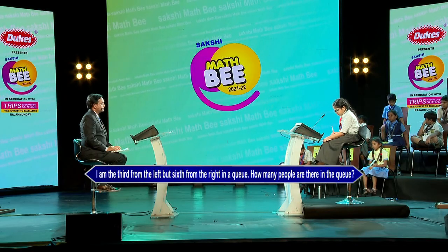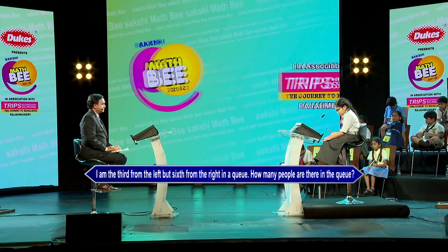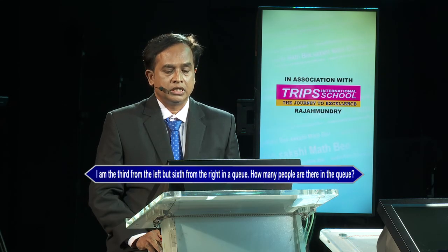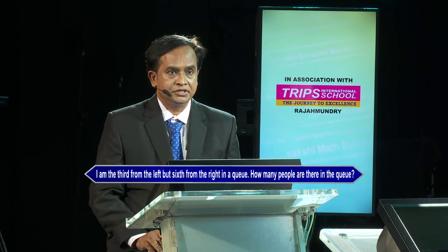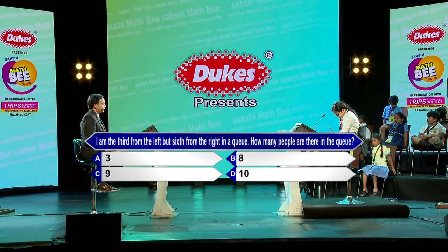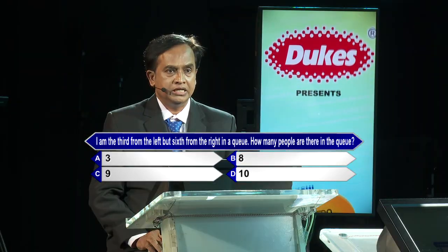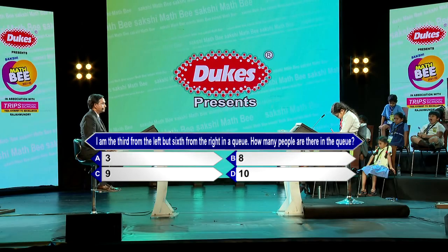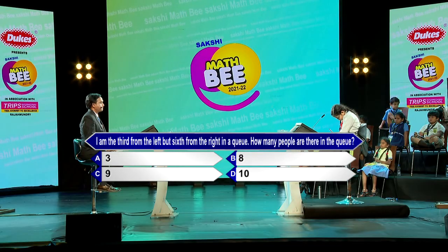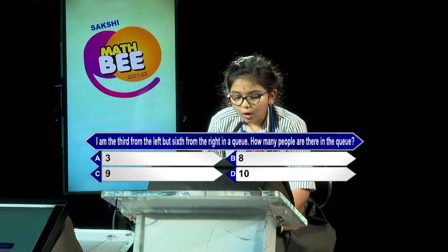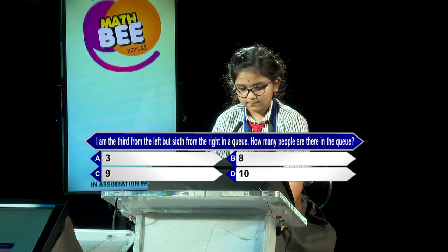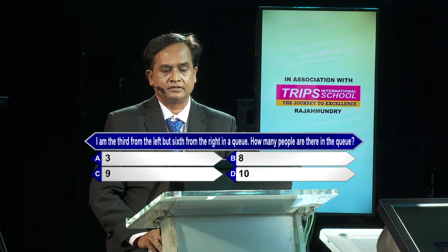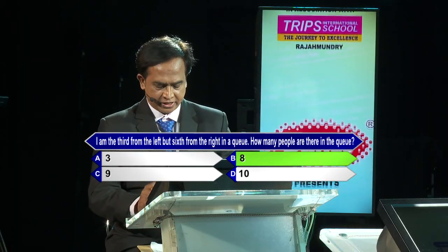Next I call upon Samanvi from Trips International School Rajmandri. Question please: I am the third from the left but sixth from the right in a queue. How many people are there in the queue? Options: A) 3, B) 8, C) 9, D) 10. Option B 8 — kindly lock option B 8. Brilliant, option 8 is correct. Very good, well done.